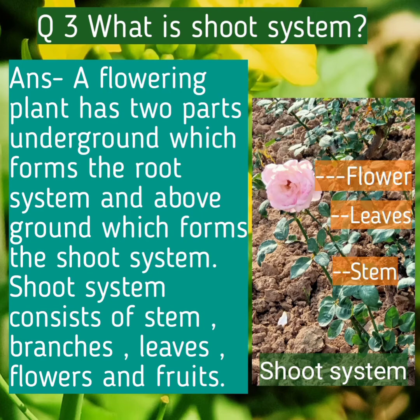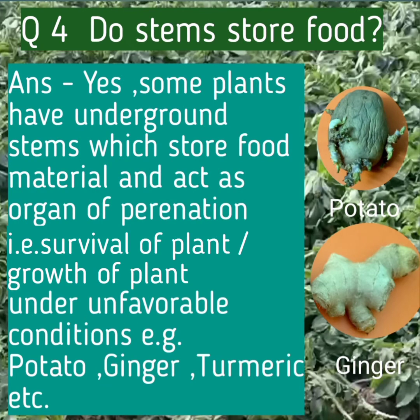The underground part forms the root system and the above-ground part forms the shoot system. The shoot system consists of stem, branches, leaves, flowers, and fruits.